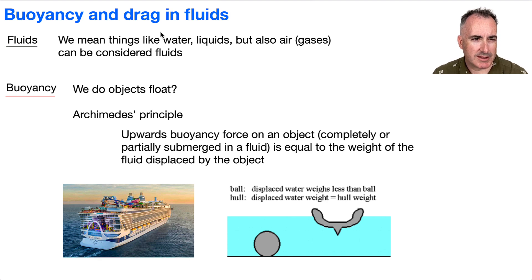Now, let's talk about buoyancy. Buoyancy is the ability for something to float. So the question is, how do things actually float? This is what we're learning about: Archimedes' Principle. This principle says that the upwards buoyancy force on an object, whether it's completely or partially submerged in a fluid, is equal to the weight of the fluid displaced.